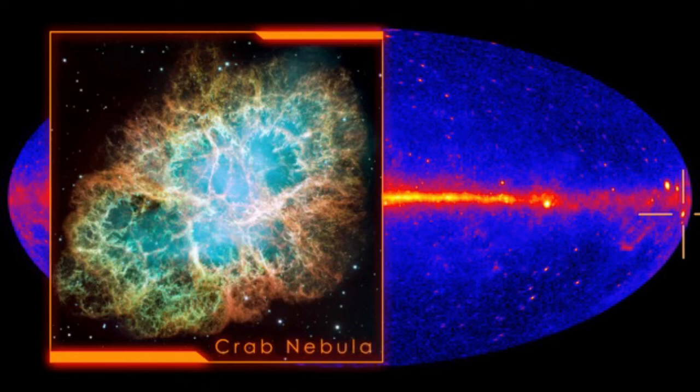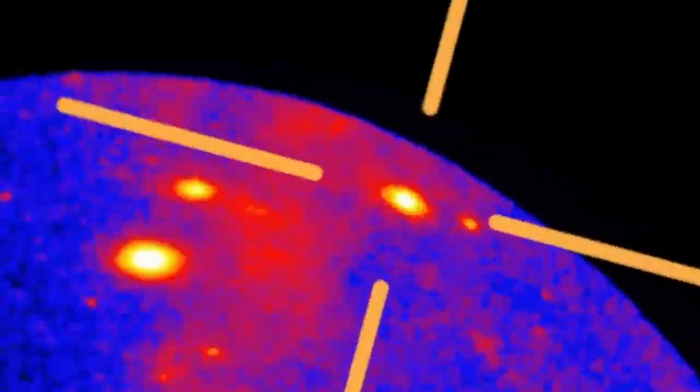Here's what the sky looks like in high-energy gamma rays. The pulsar in the Crab Nebula is among the brightest sources.